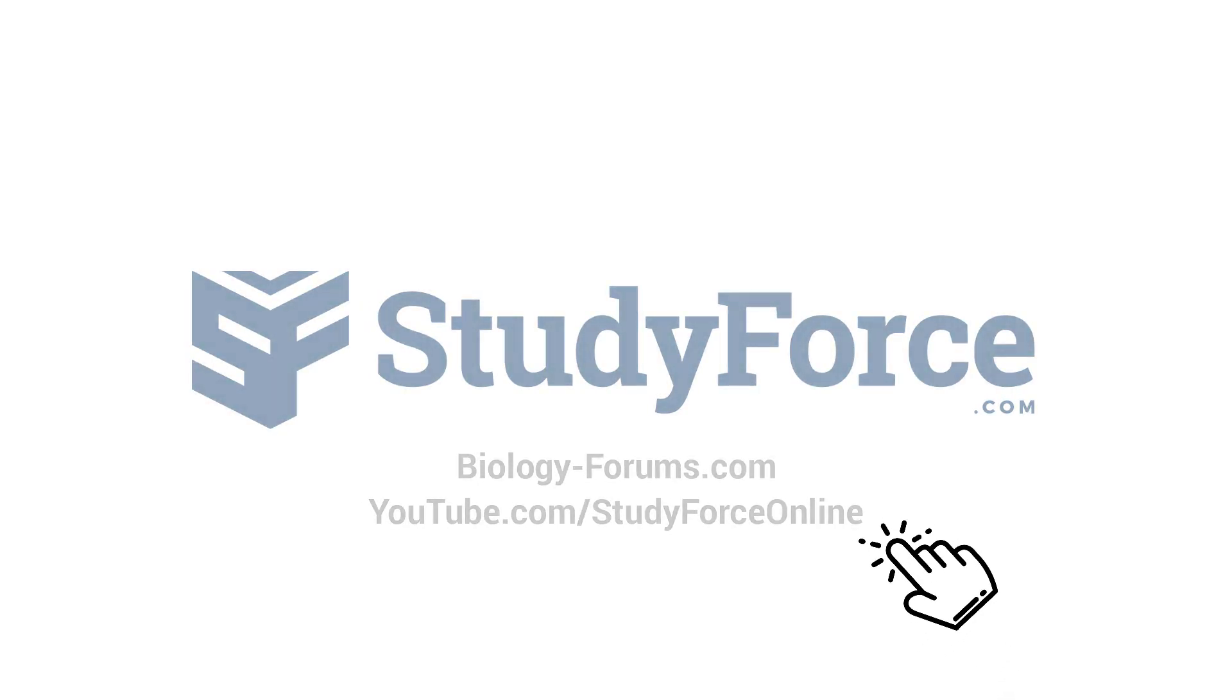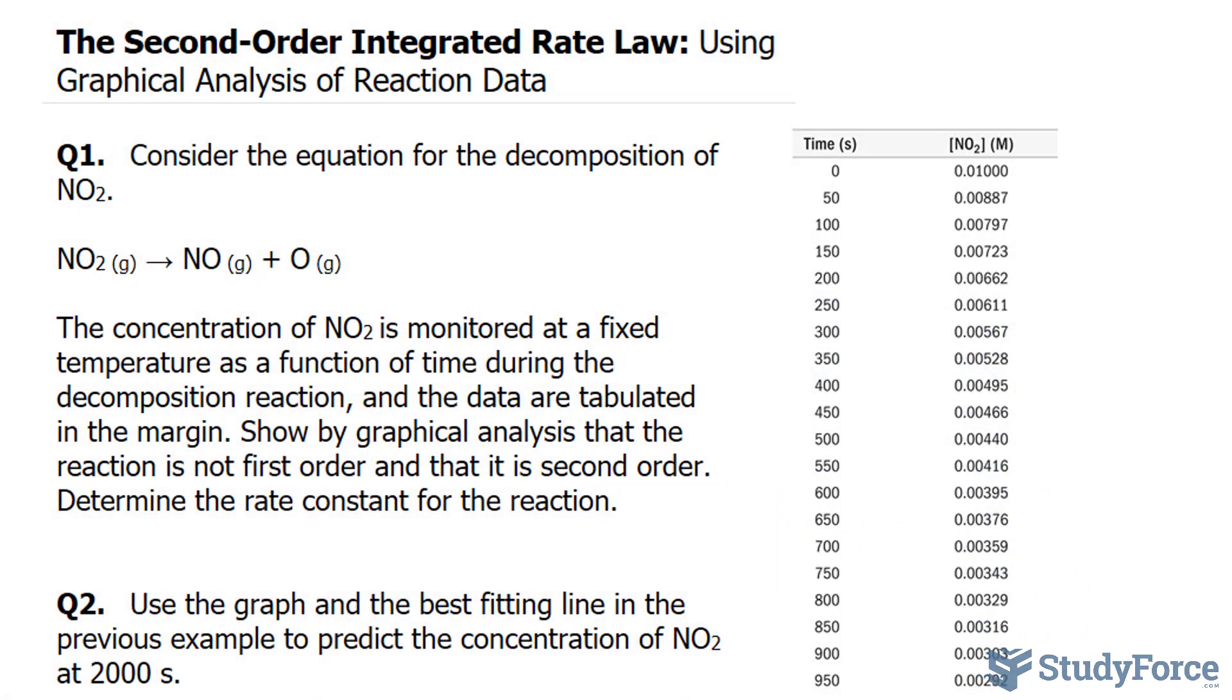In this lesson, we'll go through two examples where we use graphical analysis to determine the rate constant for a reaction. This will be done using the second-order integrated law.